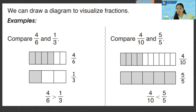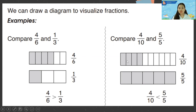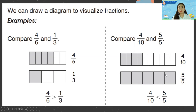Compare four tenths and five fifths. For four tenths, divide by ten and shade four parts. For five fifths, divide by five and shade all five parts. As you can see, five fifths is shaded more, so five fifths is greater than four tenths, or four tenths is less than five fifths. Always remember when you compare, the mouth of the symbol is always at the big number or big fraction.